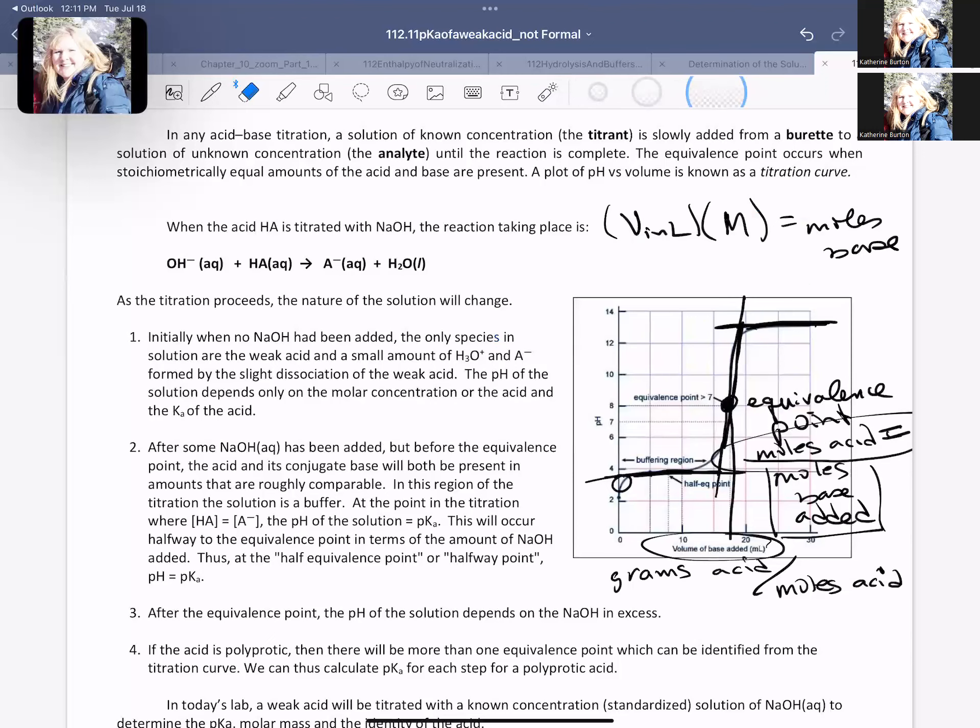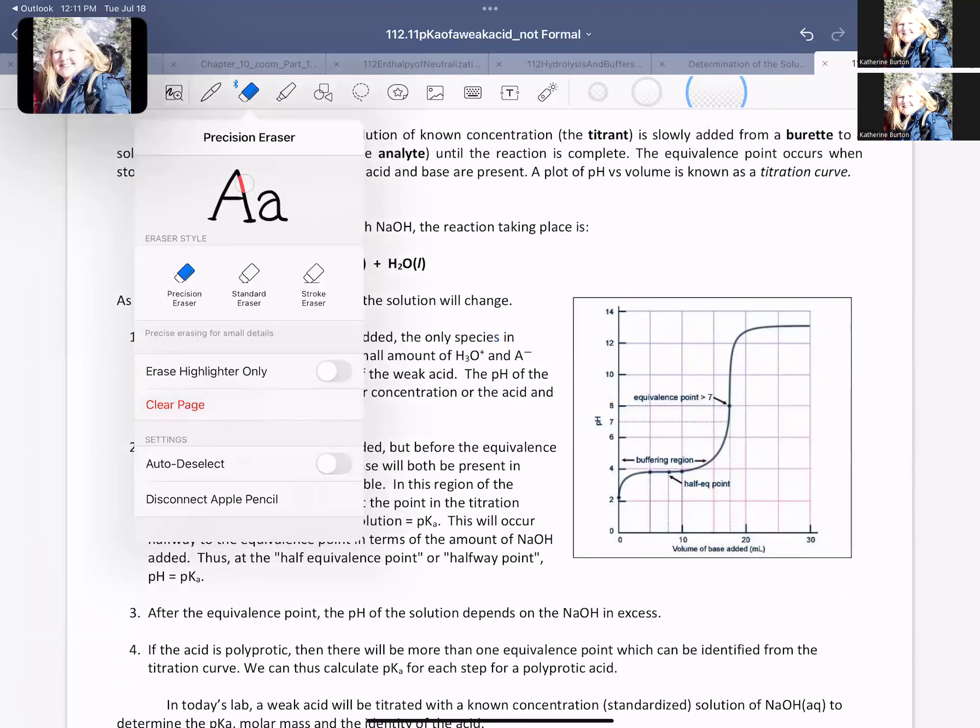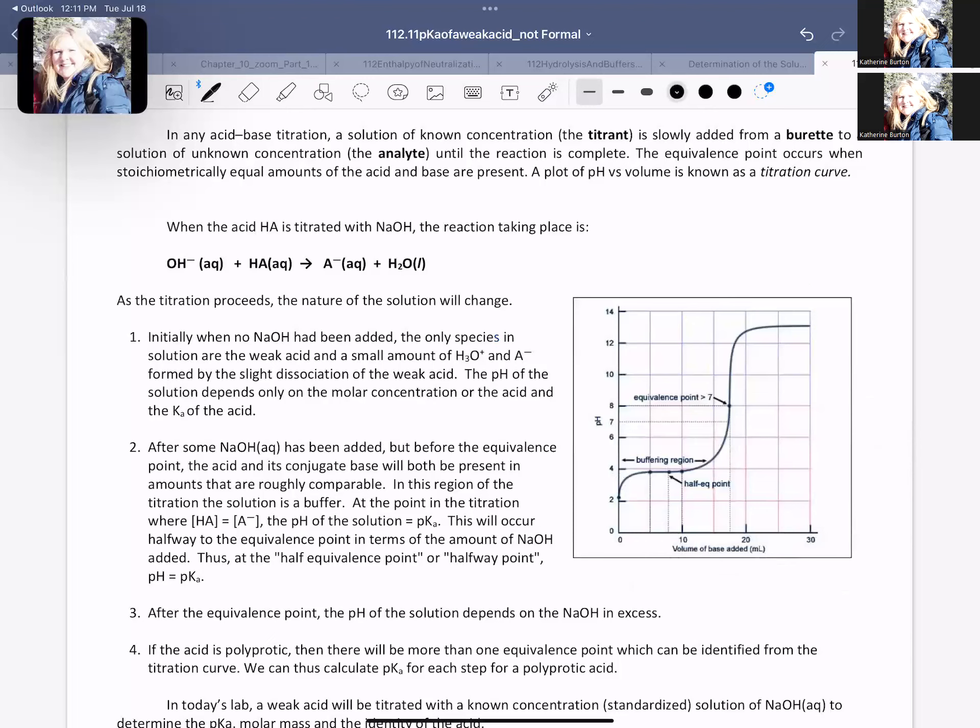The second thing that we have to get off of this graph, again, we've got to have nice grid lines in order to do this, is that if we have our equivalence point here, halfway to the equivalence point by definition, our pH of our solution is going to equal pKa of our weak acid.